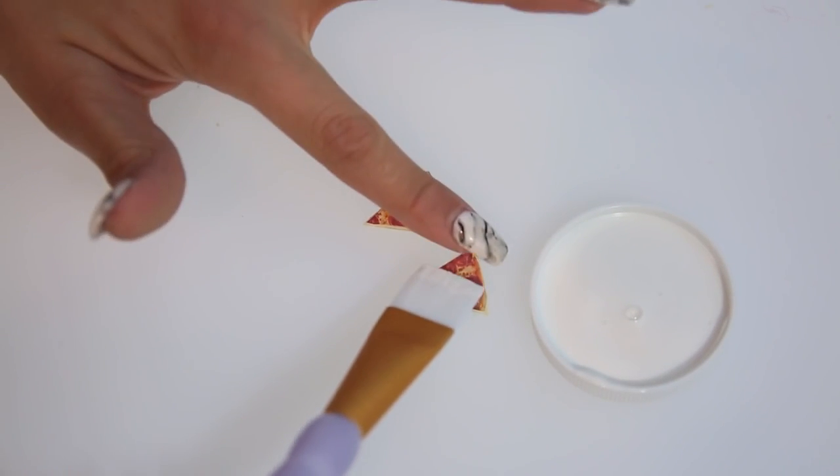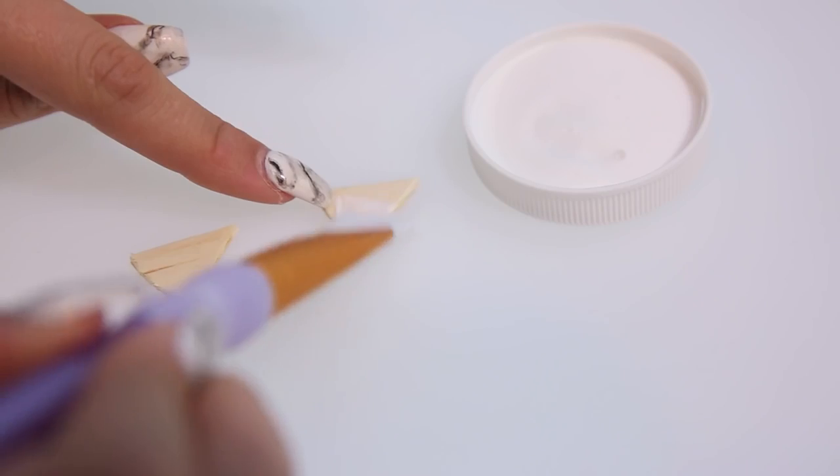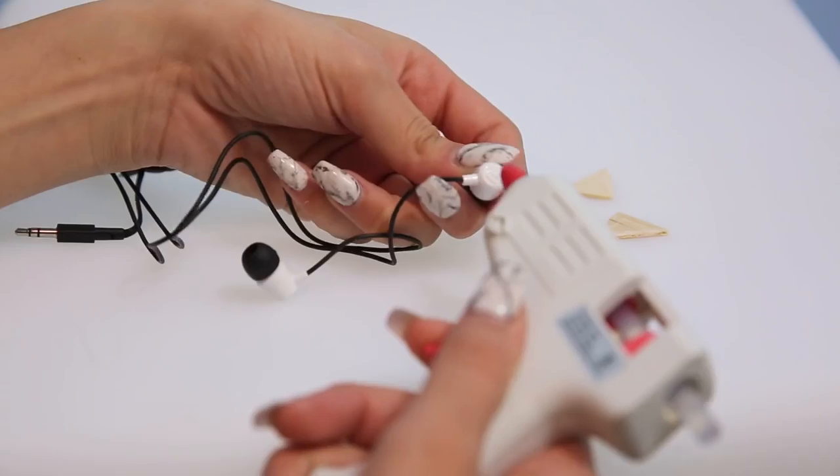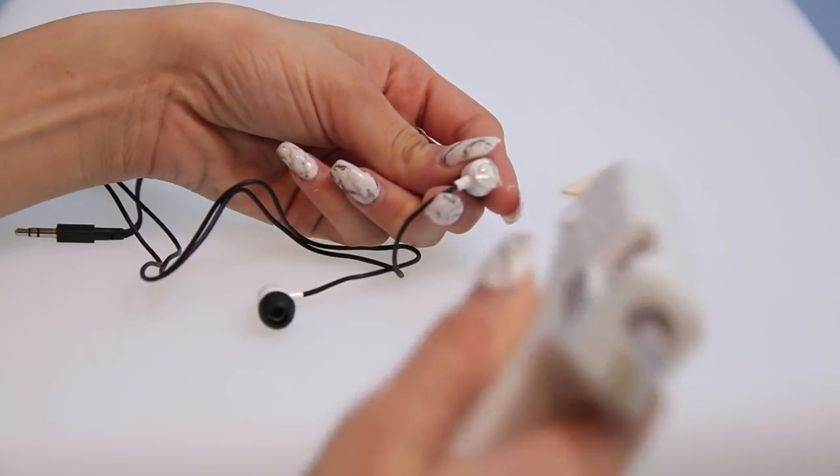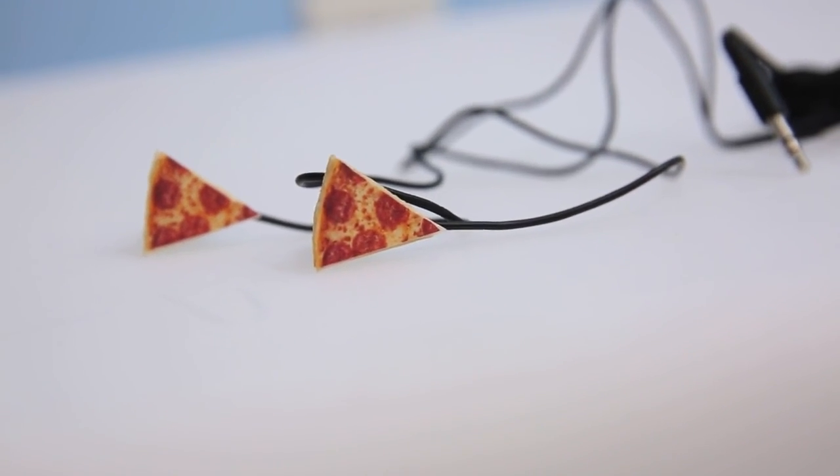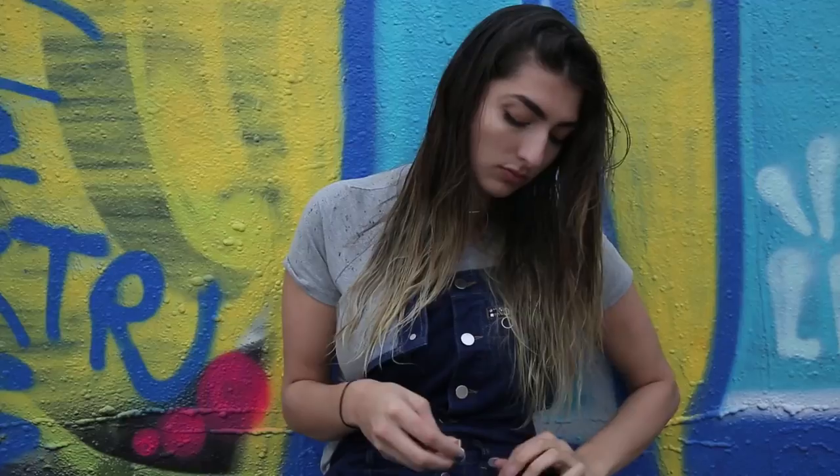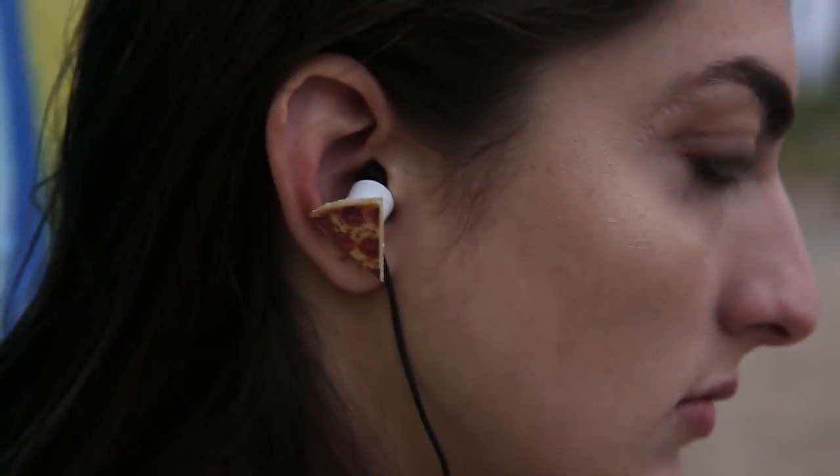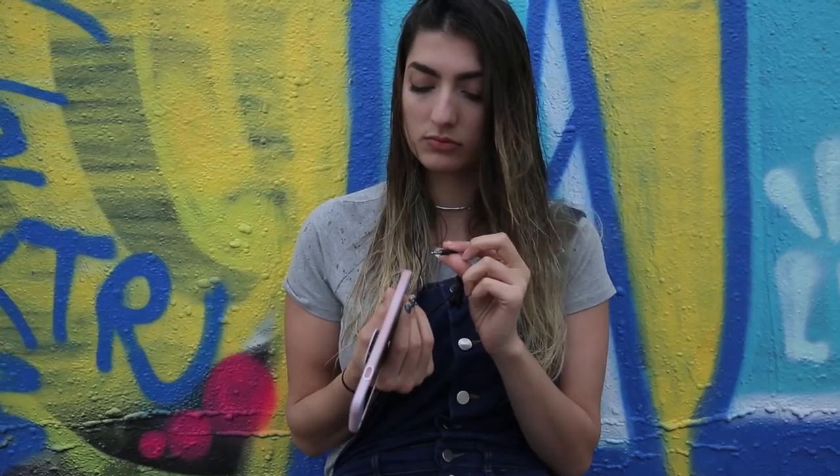And put some Mod Podge onto the popsicle stick and stick the pizza onto it. Then paint the Mod Podge onto the pizza and the back of the popsicle stick and wait for it to dry. Now take a hot glue gun and hot glue the pizza onto the back of the headphones. And there you go! You hear pizza now! Or not!